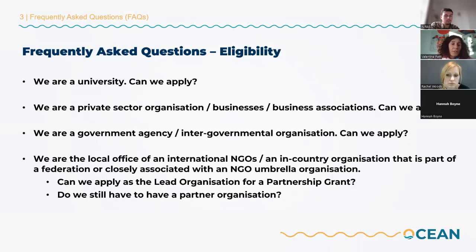Government agencies and intergovernmental organisations — for example, UN agencies — can be partner organisations. They cannot be lead organisations, and they may not receive funding, which means they can only provide in-kind contributions.